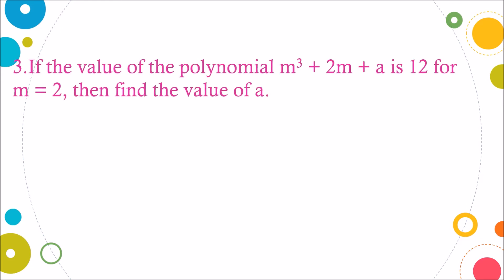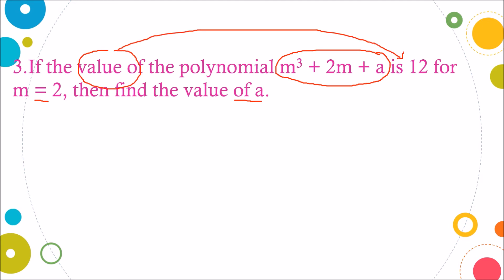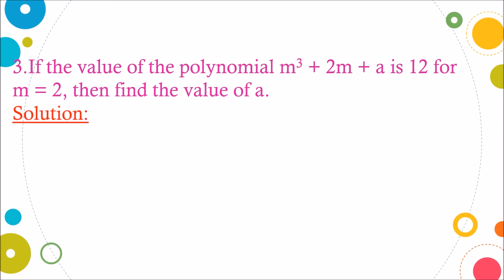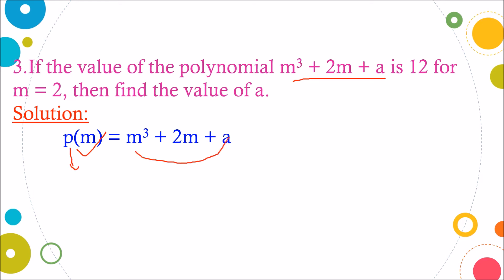If the value of the polynomial m raised to 3 plus 2m plus a is 12 for m equals 2, then find the value of a. Here we have polynomial m³ + 2m + a and its value is given as 12 when m is 2. We will assume the given polynomial as p(m), where p stands for polynomial and it contains variable m.